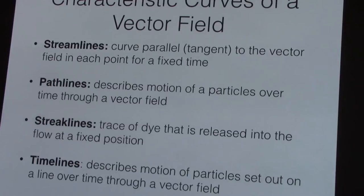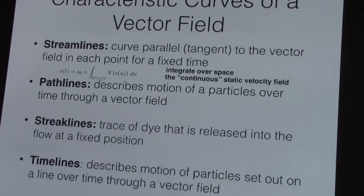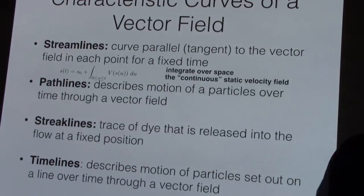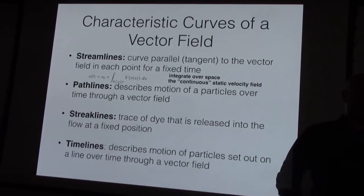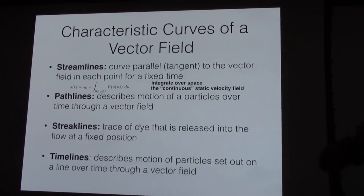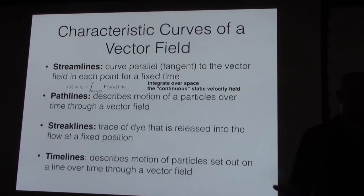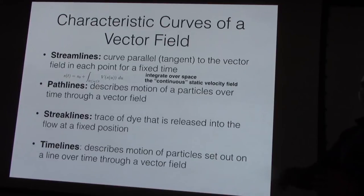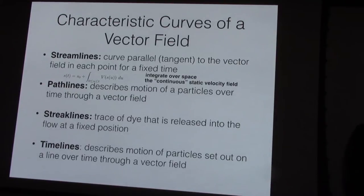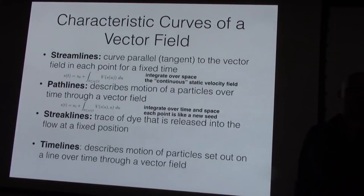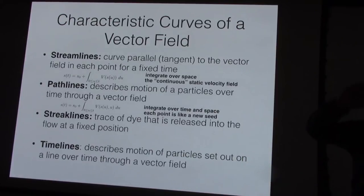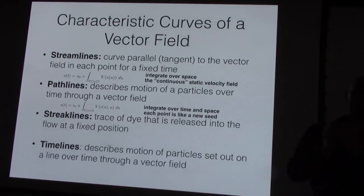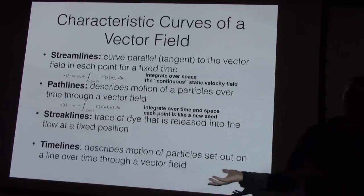The streamline is a curve that is everywhere tangent to the vector field. Here you only integrate over space, not time — if you perfectly interpolated the vector field from discrete to continuous, you'd end up with infinitely thin streamlines. All these techniques — streamlines, pathlines, streaklines, timelines — are for ideal massless particles that follow the vector field however you integrate it. Pathlines integrate over both time and space: instead of taking one seed point and moving tangent to the field, you are reseeding at every step and following the particle regardless of how the vector field changes.